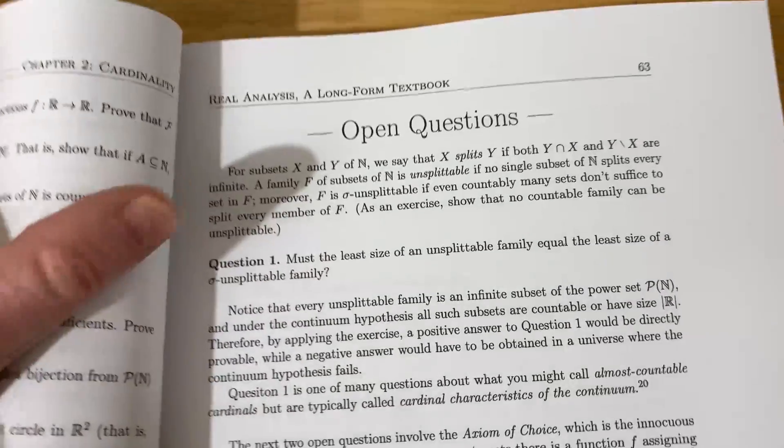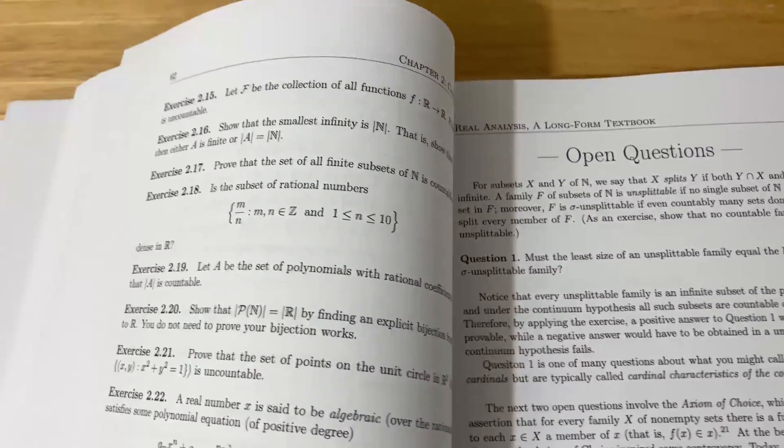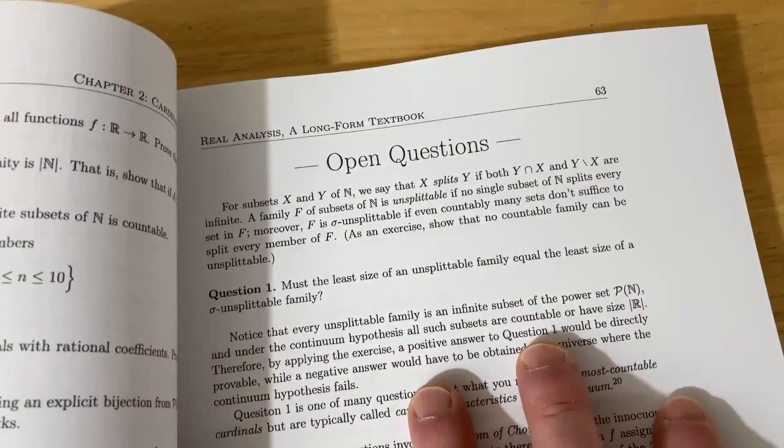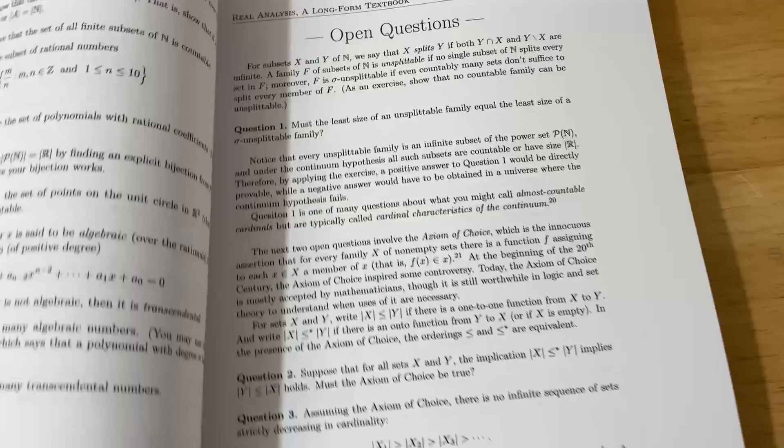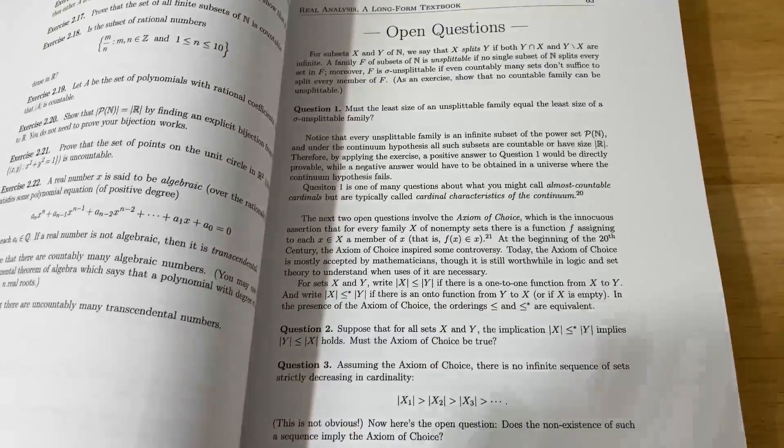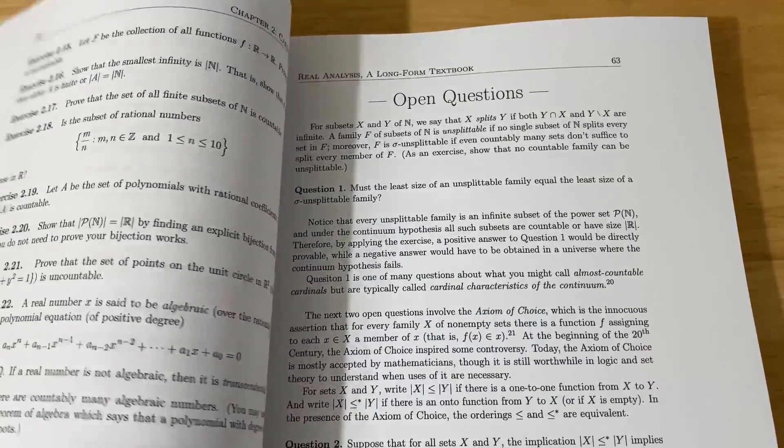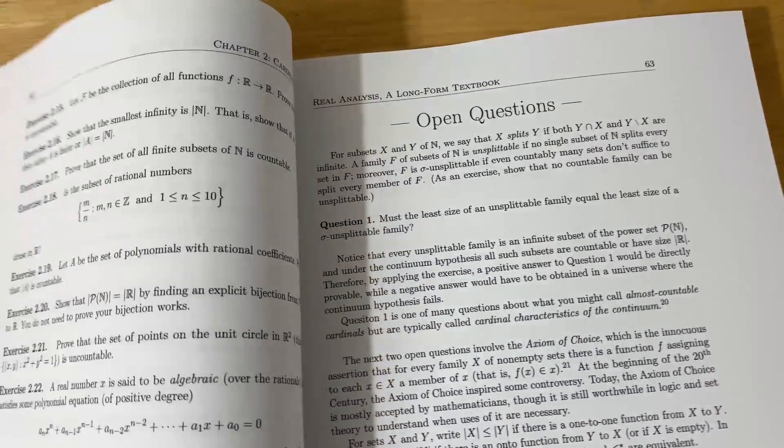Open questions. So, Jay Cummings has done something amazing here. After each exercise set, you have open questions. Basically, these are unsolved problems in mathematics, and they're in this book. So, an amazing book that's great to read, and you have open questions. Really cool. And he does that for every single chapter after the exercises.